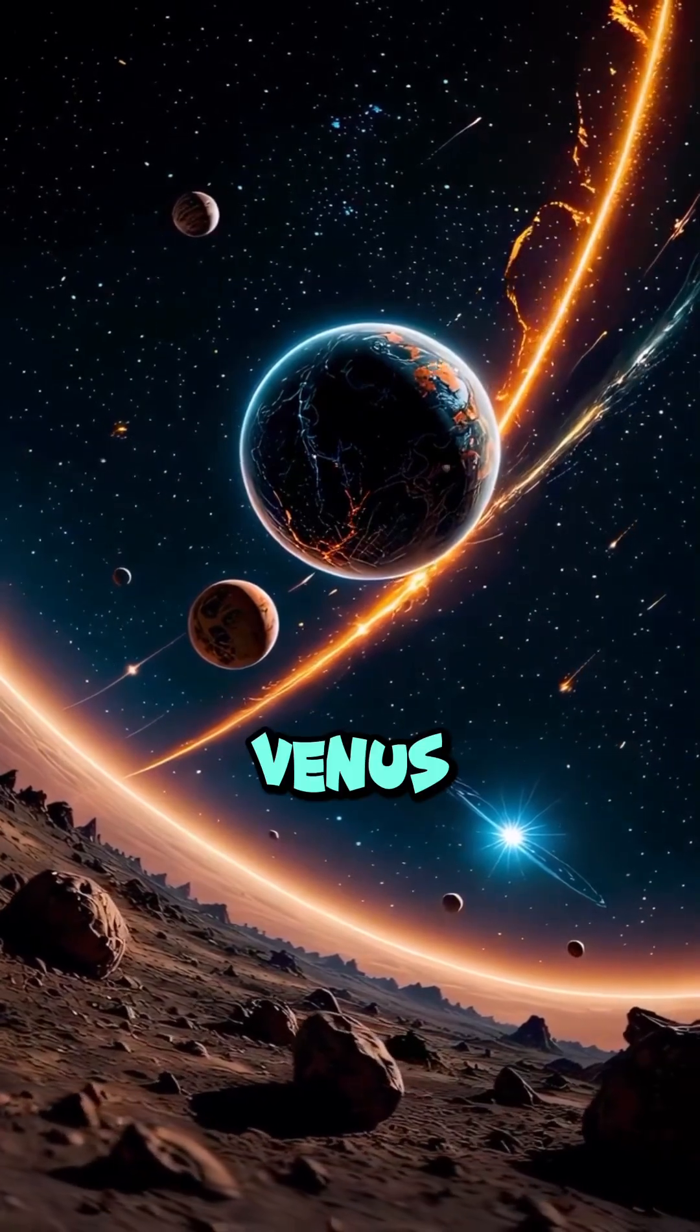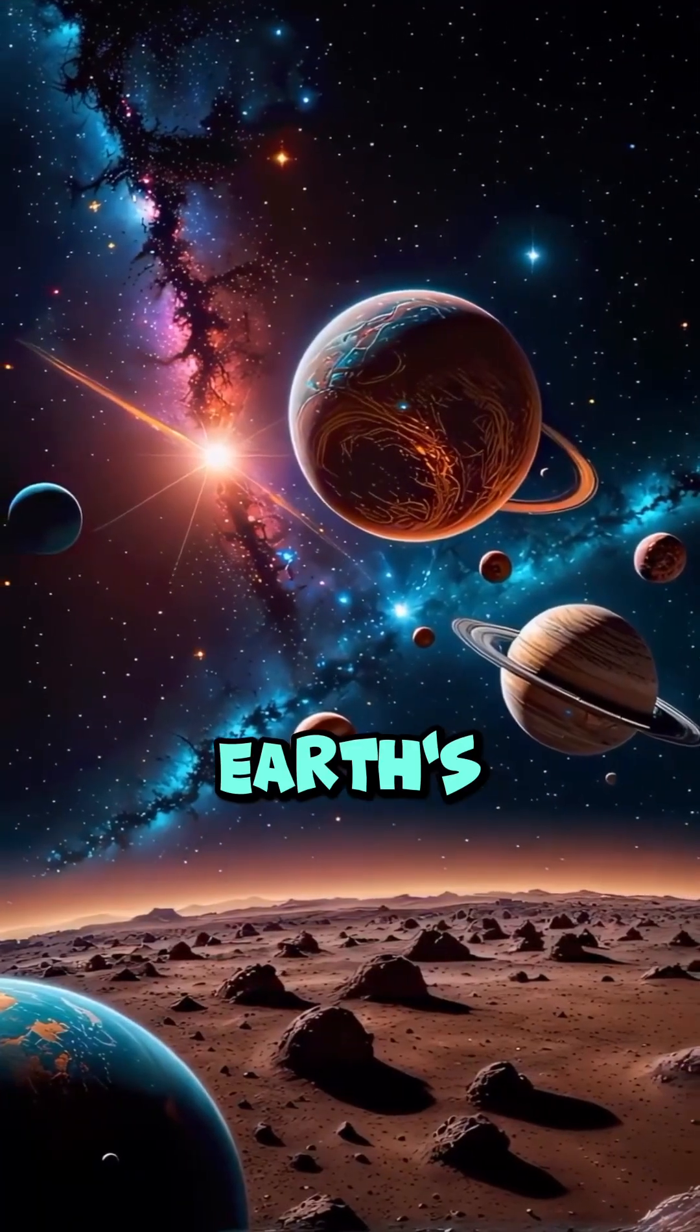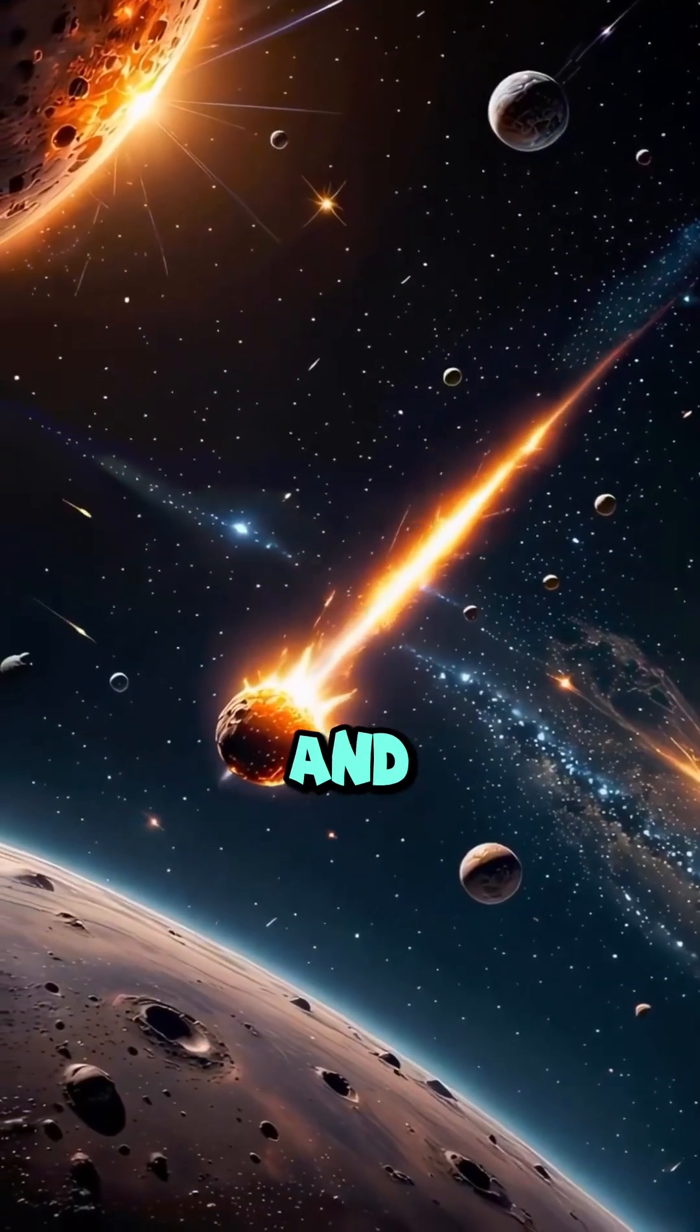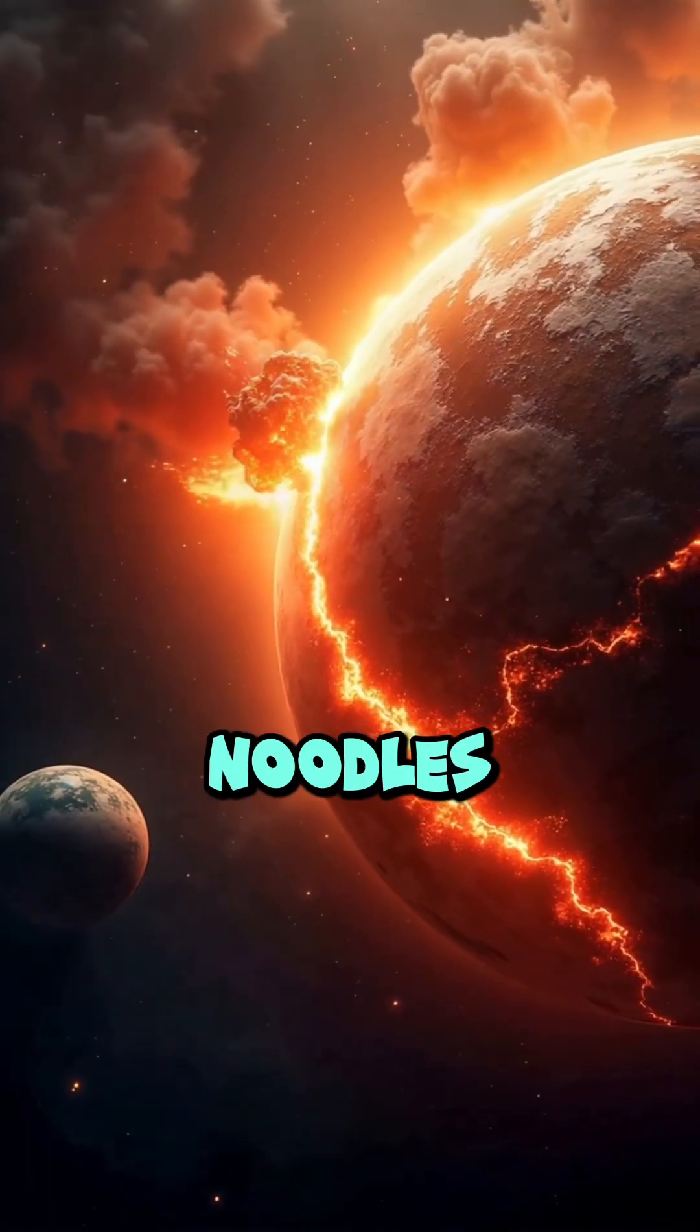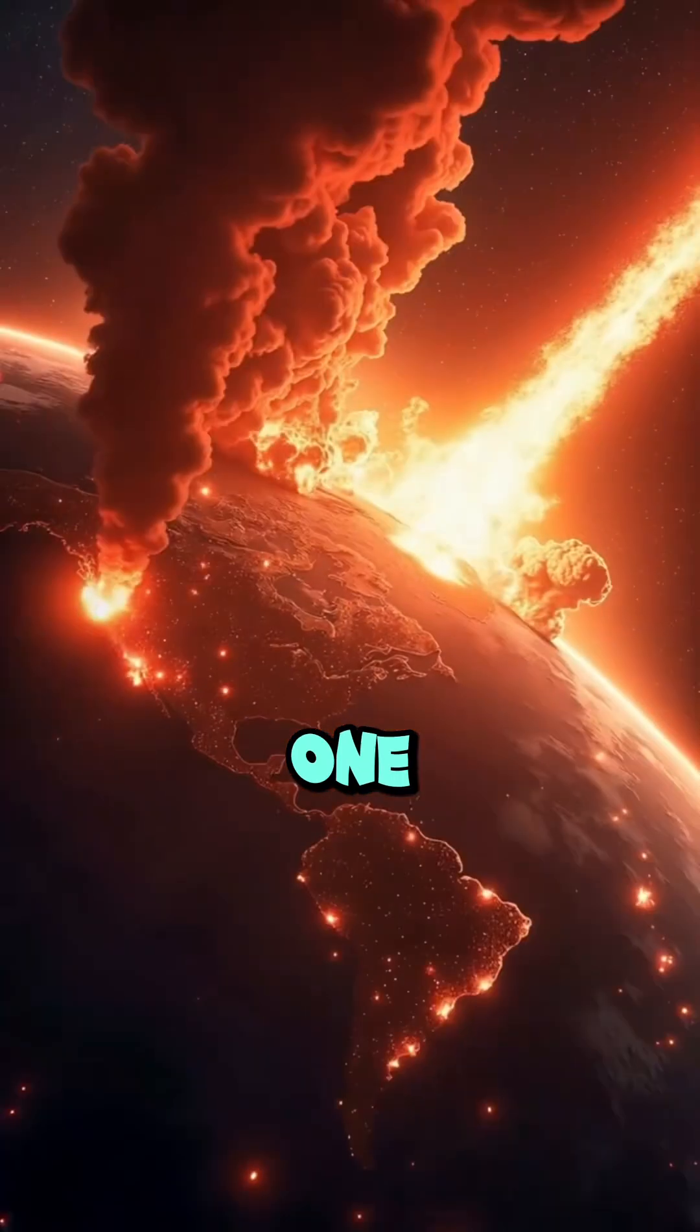Number eight: Venus is Earth's evil twin. Earth's twin has acid rain and 900 degrees Fahrenheit heat. Number nine: black holes noodles. Fall in one and you'll get spaghettified.